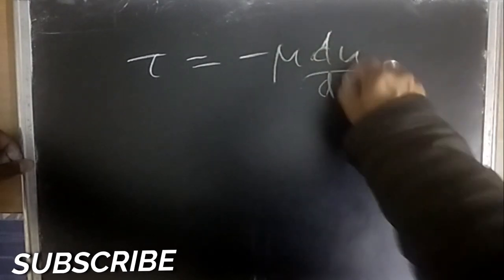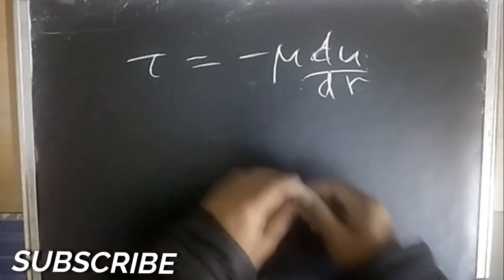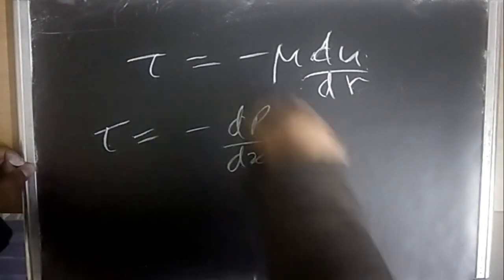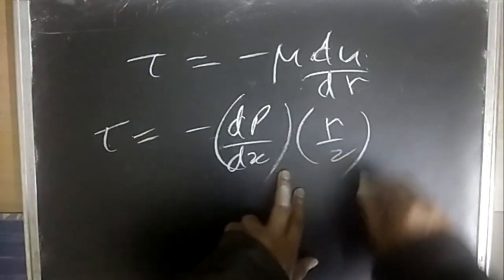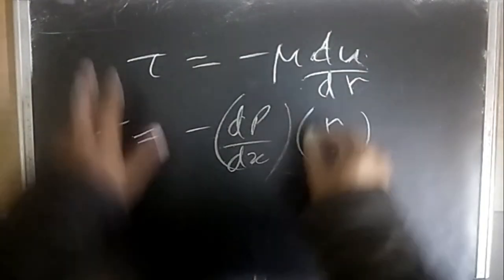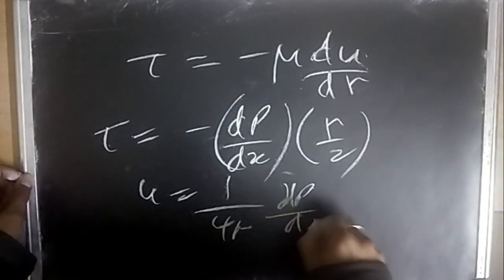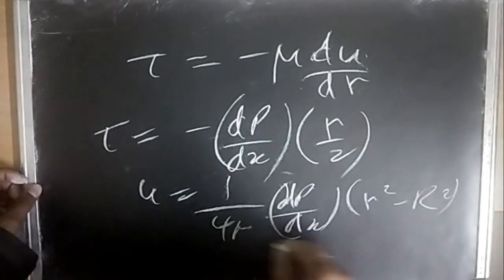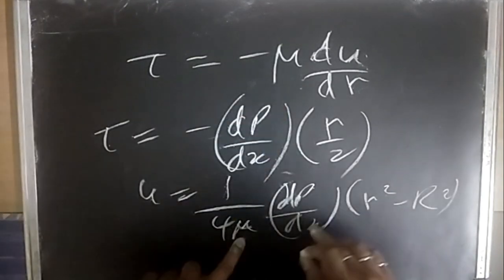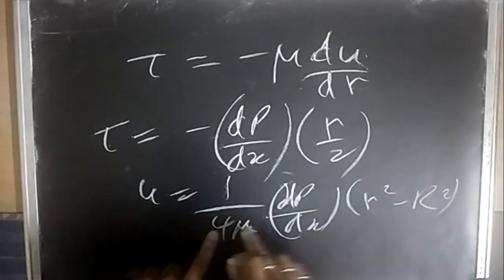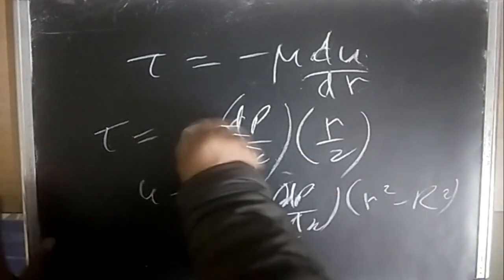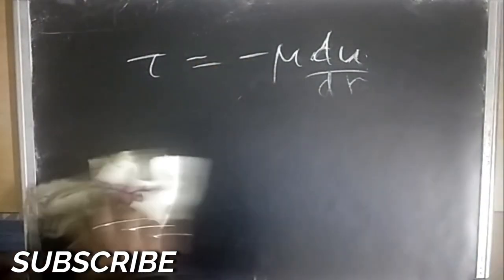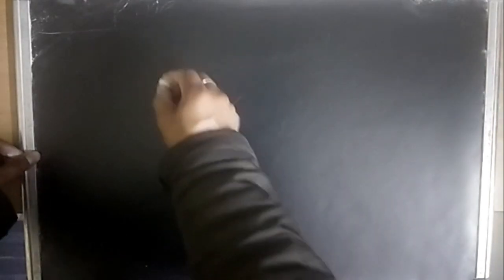For flow between flat plates: u = (1/2μ)·(-dp/dx)·(ty - y²), where t is the gap between plates and y is the distance from one wall. Here u_max/u_avg = 1.5. Wall shear stress τ = -μ·du/dr = (-dp/dx)·r/2 for a pipe; you can derive this directly from the velocity profile by differentiating.